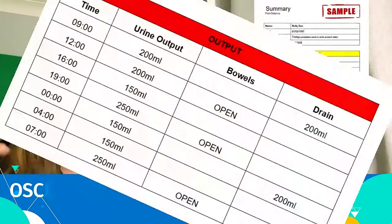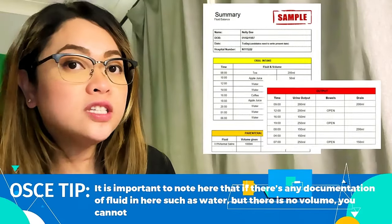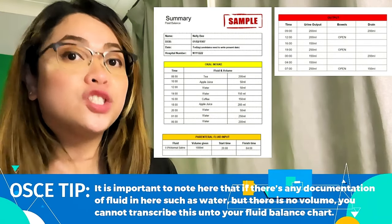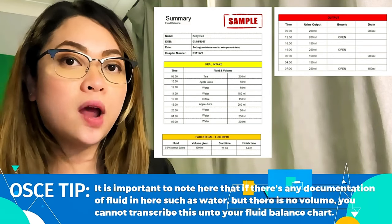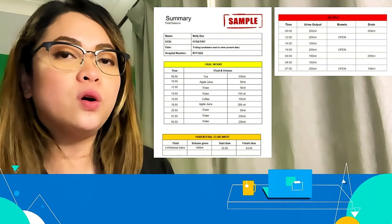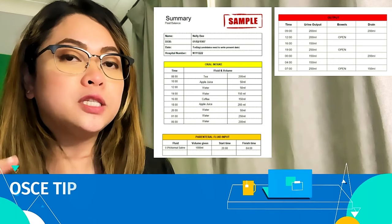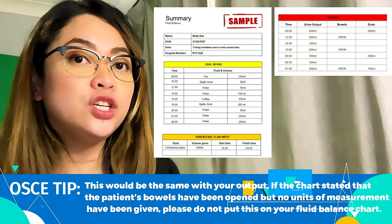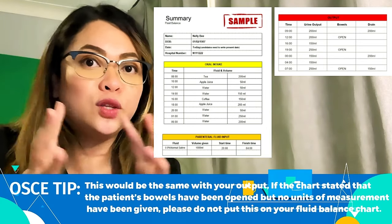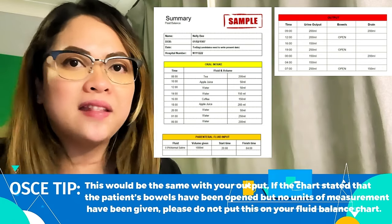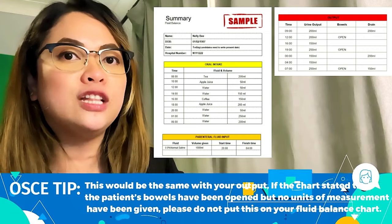Just a tip — nurses, listen and take note. It is important to note that if there is any documentation of fluid, such as water or coffee, but there is no volume given, you cannot transcribe this onto your fluid chart. Remember that. If there's no volume, do not write it on your fluid chart. This would be the same case with your output and your bowels. If the chart states that the patient's bowels opened but no unit of measurement is given, please do not put this into your fluid chart. Do not assume any amount — there is nothing to add if there is no specific measurement.